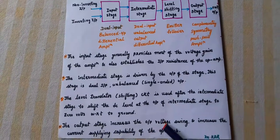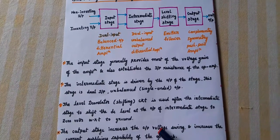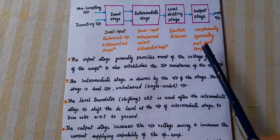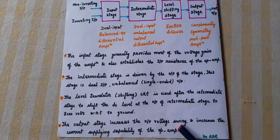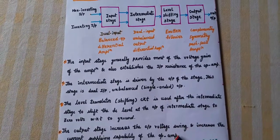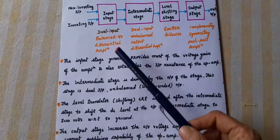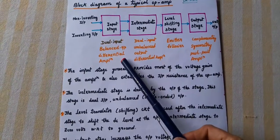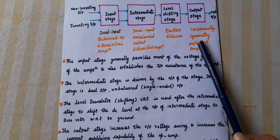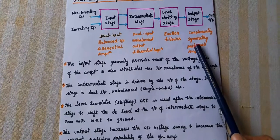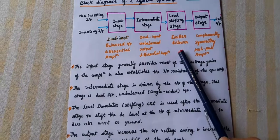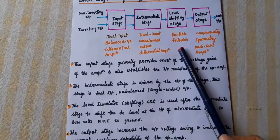What is the output stage doing? It increases the current supplying capability of the op-amp. So the input stage provides most of the voltage gain, the emitter follower brings the DC level to 0 volts, and the output stage increases the current supplying capability of the op-amp.